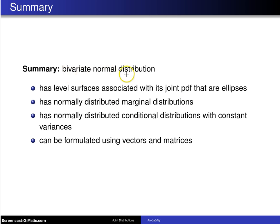Third, the bivariate normal distribution has normally distributed conditional distributions and those conditional distributions have a constant variance.